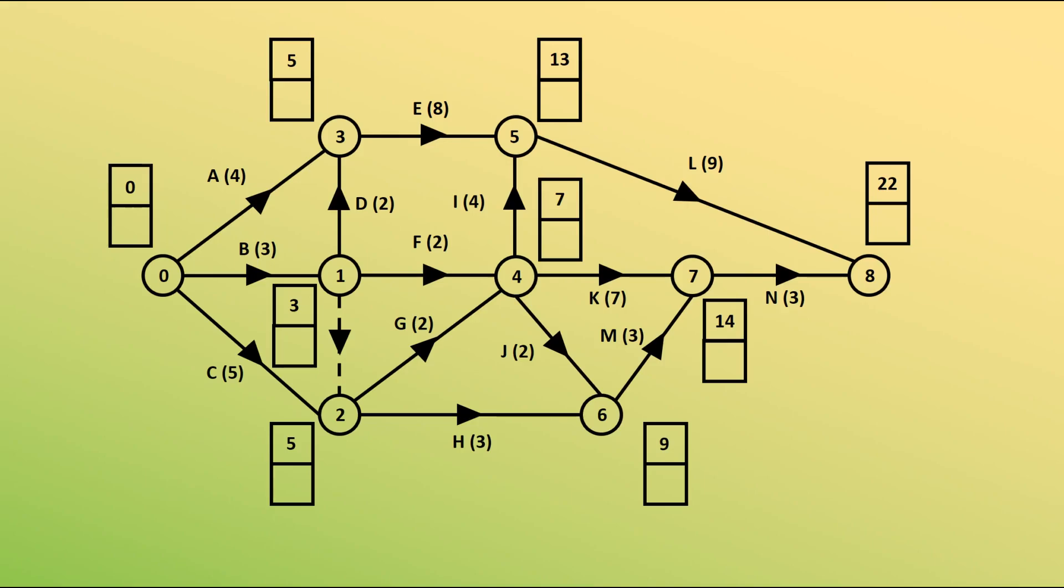We're now going to do a backwards pass, starting at node 8 and ending at node 0, to find the latest event time, which is going to go into those bottom boxes. Since we know that we can get to 8 at time 22, it makes sense to have 22 as the late event time there. We don't really want to take any longer than the minimum amount of time to complete the job. Now it's worth me saying that node 0 should always have a 0 in that bottom box as well, but don't write it in at this stage. Use the method of going back through with this backwards pass, and hopefully you should end up with a 0 at that point, so it's a good way of checking your working.